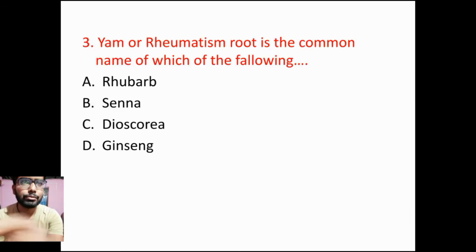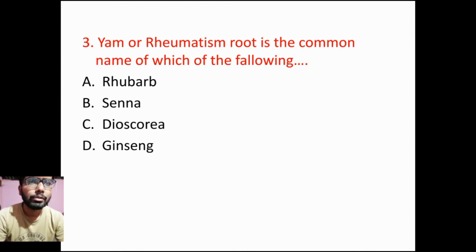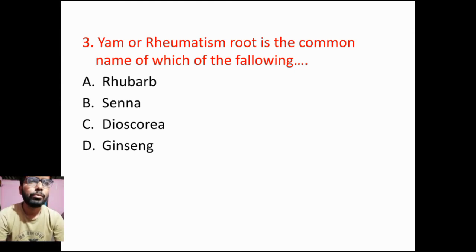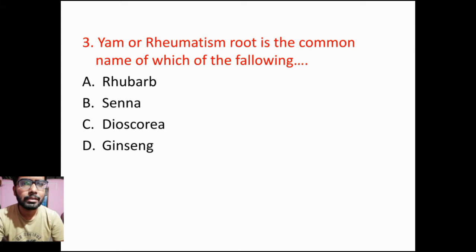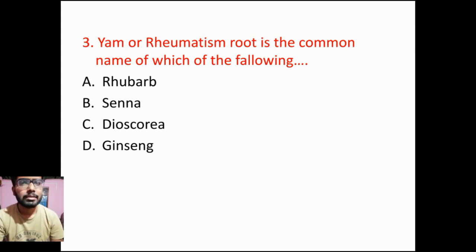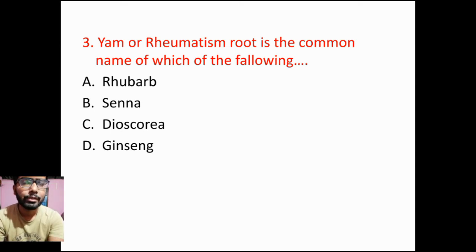Next question: EAM or rheumatism root is the common name of which of the following? Option A: rhubarb, Option B: Senna, Option C: Dioscorea, Option D: ginseng. The common name of Dioscorea is EAM or rheumatism root.